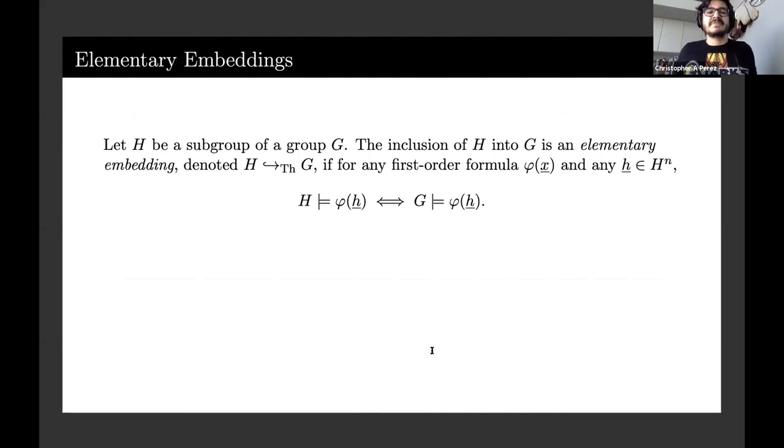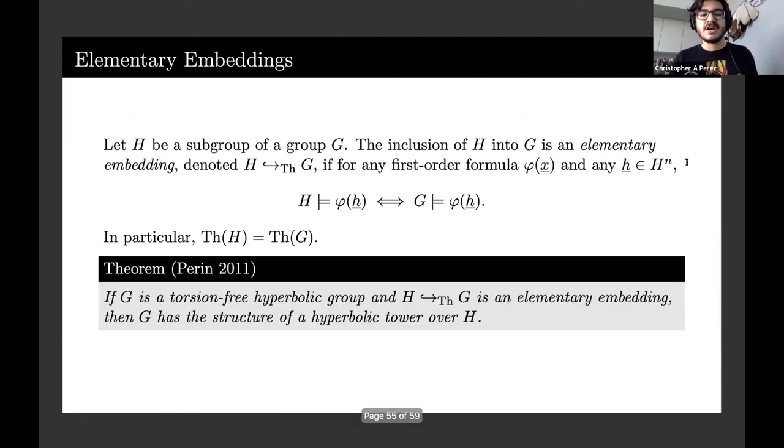An elementary embedding is a bit stronger than being elementarily equivalent, which is having the same elementary theory. It means you have a subgroup so that for any first order formula and any tuple of elements in H, that formula with the assignment of that tuple is valid in H if and only if it's valid in G. In particular, they have the same first order theory.